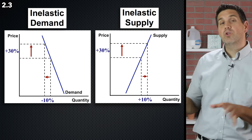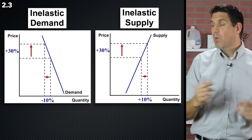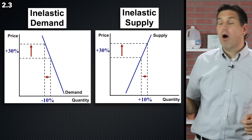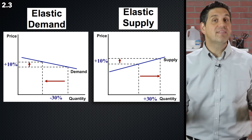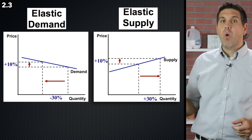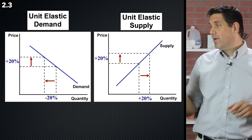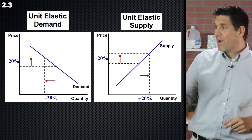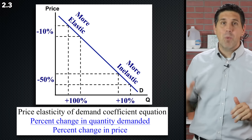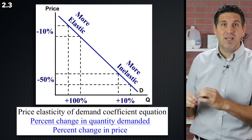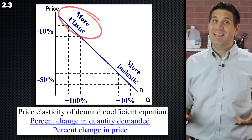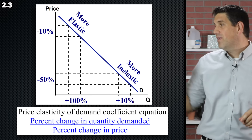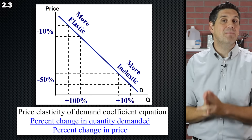If the demand curve is really steep, quantity is insensitive to a change in price — a big change in price leads to a small change in quantity. If a demand or supply curve is very flat, quantity is very sensitive to a change in price. If quantity changes by the exact same amount as the price, that's called unit elastic. But remember, elasticity is not the same as slope — on the same demand curve, the lower portion may be more inelastic and the upper portion more elastic.